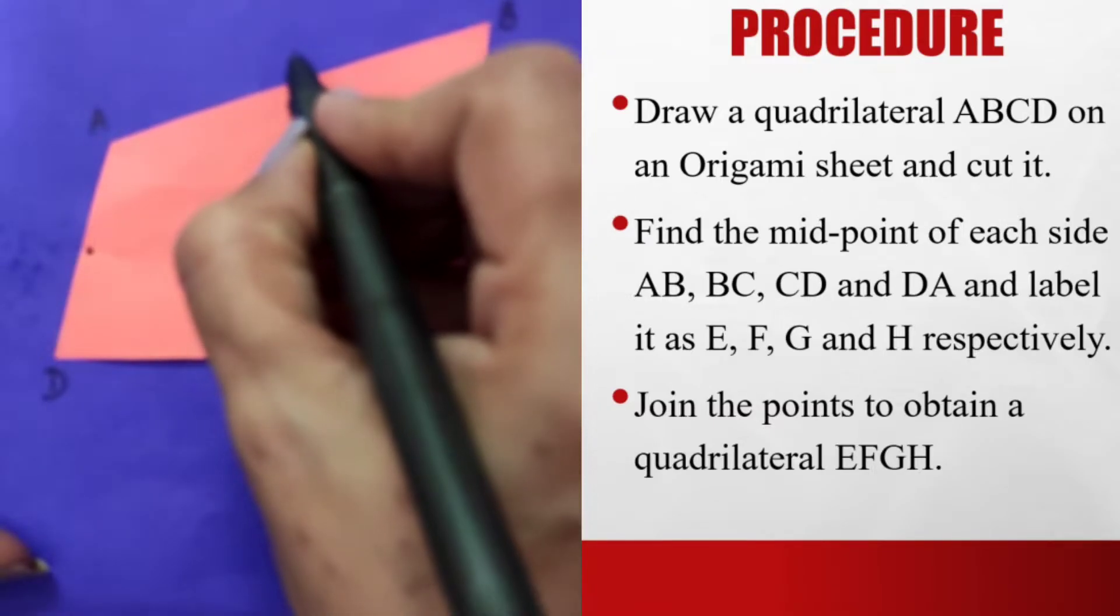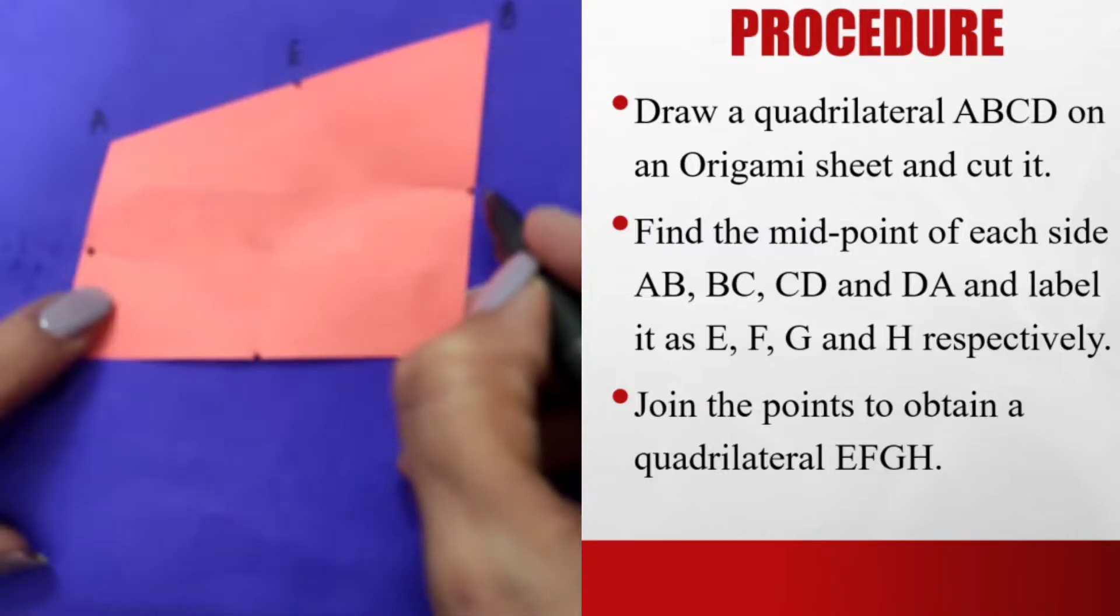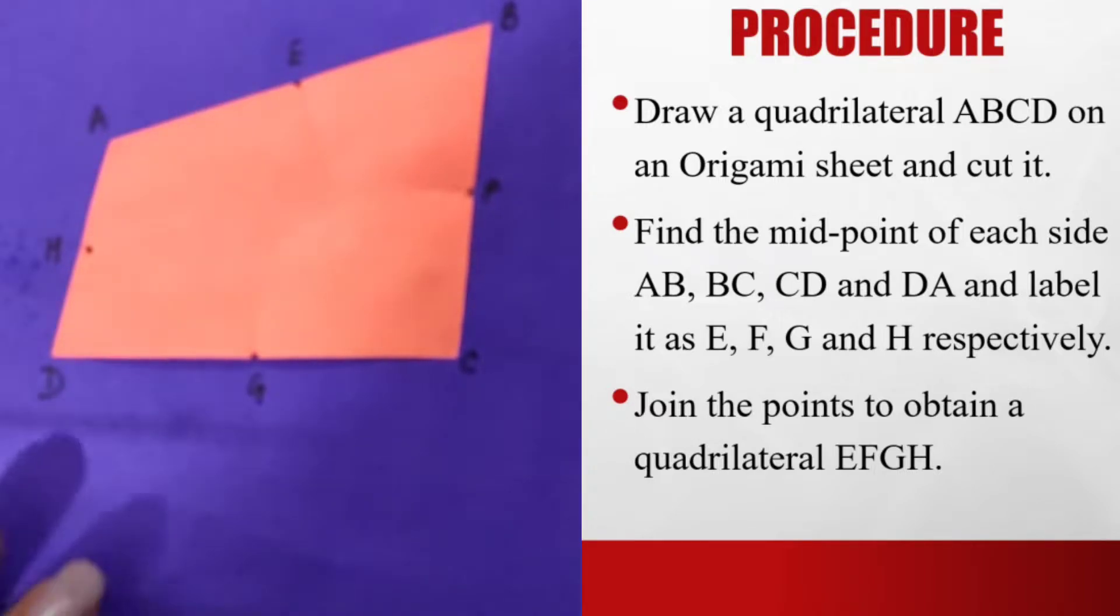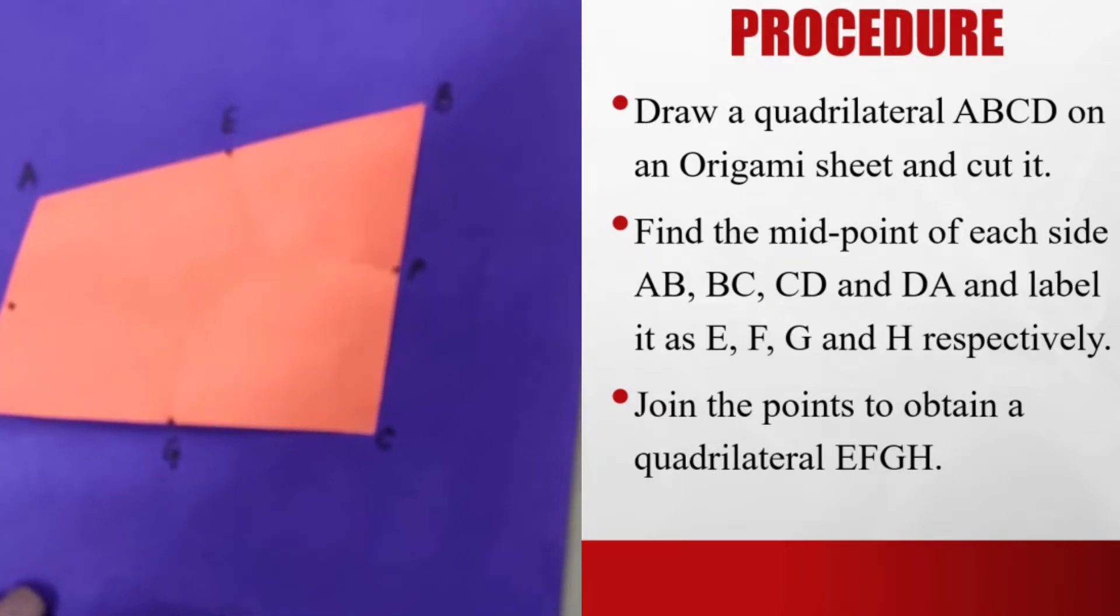I label them as E, F, G, and H. Now I will join the midpoints to get the quadrilateral.